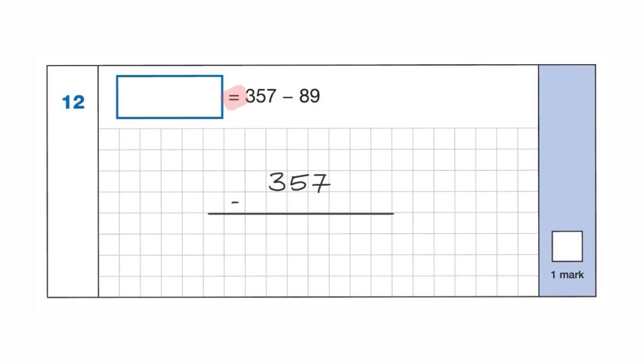357 take away 89. So 7 take away 9, that's not going to work. We don't have enough to take away. So that's going to become 4. Carry the 1. 17 take away 9 is 8. 4 take away 8 isn't going to work either, so I'm going to need to exchange. So that becomes a 2. 14 take away 8 is 6. And 2 is just going to drop down. So I've got 268. So I'm going to write that in. 268. Job done.